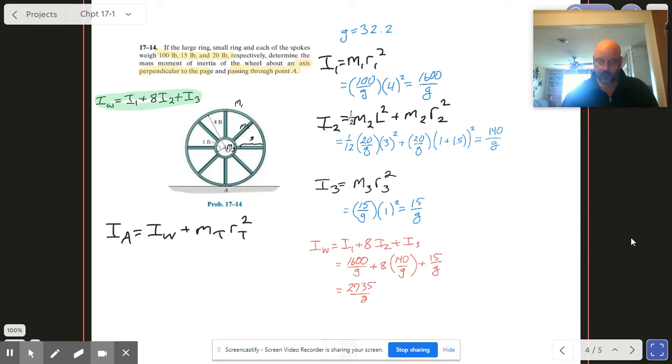So this might be a good time to go back in there and actually do our divide by g and see what we come up with. So I got 2735 divided by 32.2 because we're in English units. I get 84.9 slug feet squared. Isn't that fun, slug feet squared? Okay, so that is the moment of inertia if the thing is spinning just around its center.